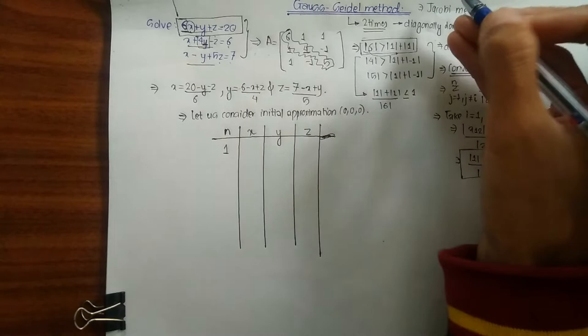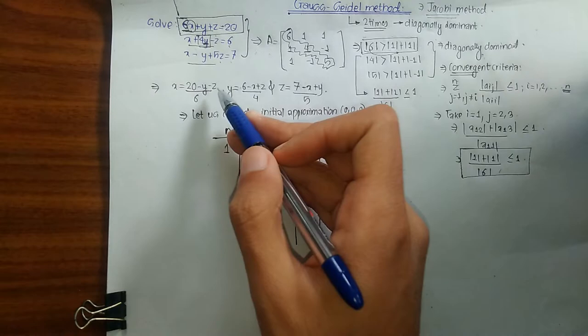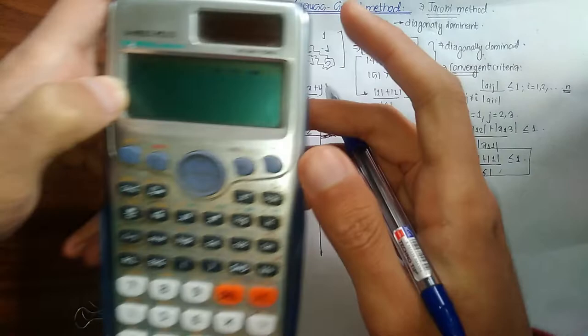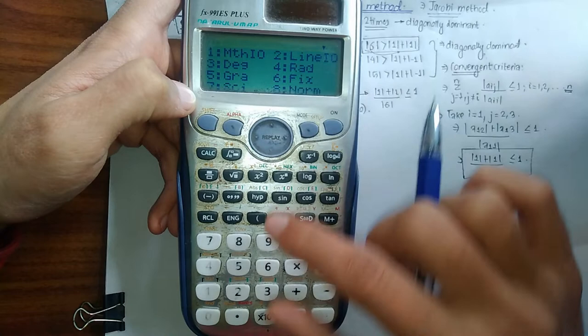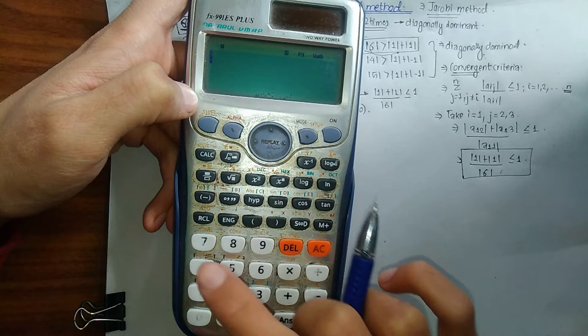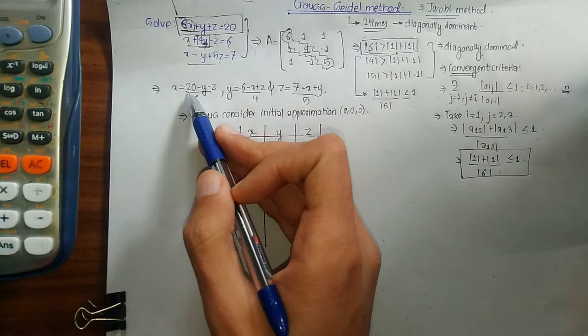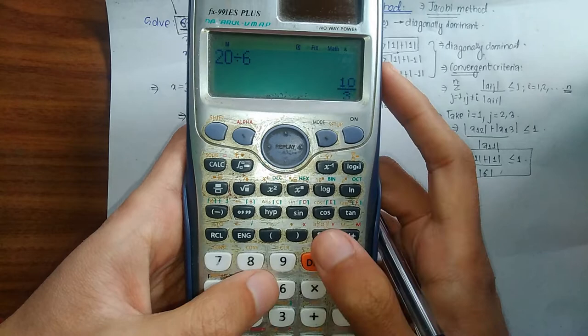To find roots correct to four decimal places, set the calculator to four decimal places: press Shift, Mode, go to Normal 6, click 6, and put 4. Now for the first calculation, substituting y = 0 and z = 0 into the x equation gives x₁ = 20 / 6 = 3.3333.